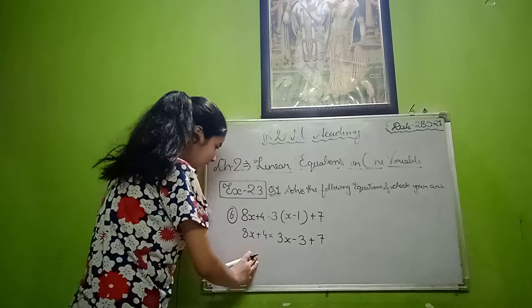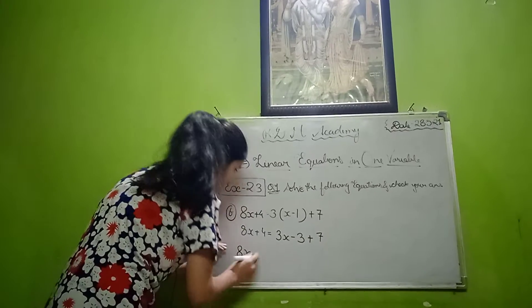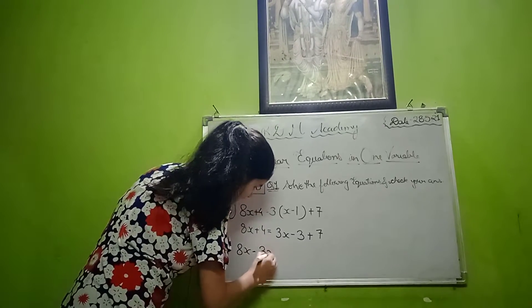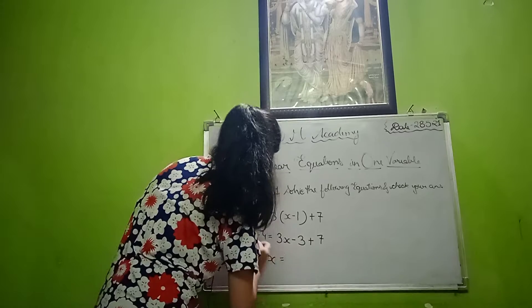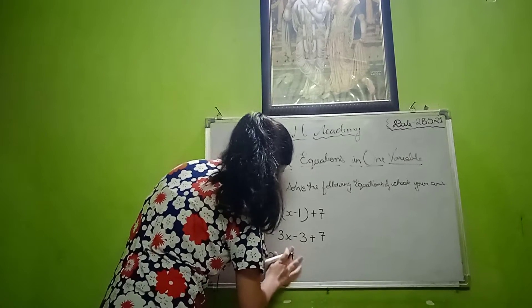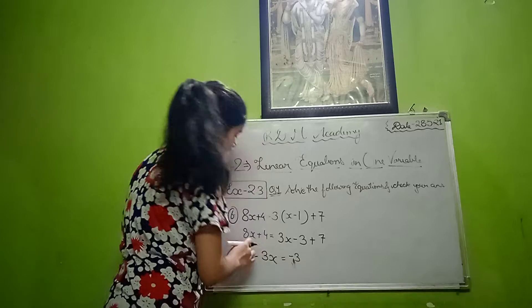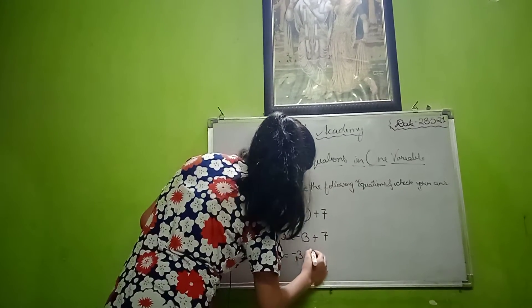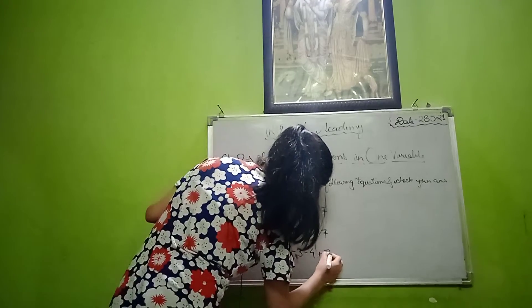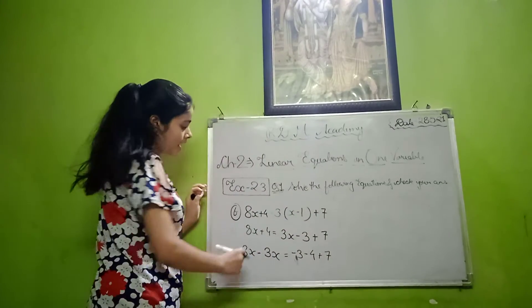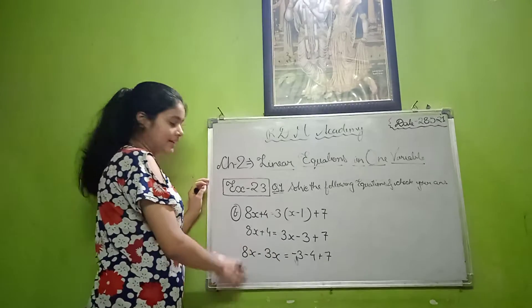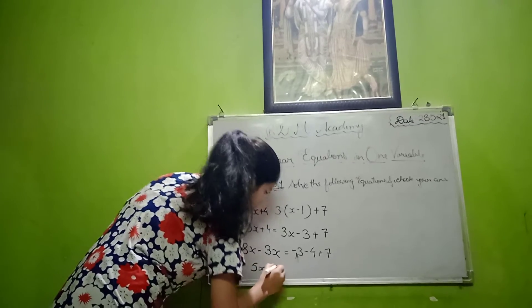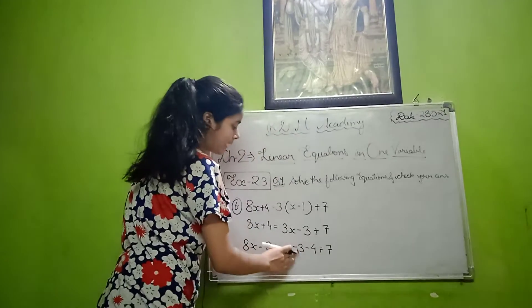Now we have to solve this problem. So, 8x minus 3x equals to minus 3. Here, the sign is plus 4 and minus 4, plus 7. Now 8x minus 3x is 5x, equals to — sign minus ka.